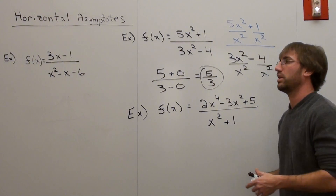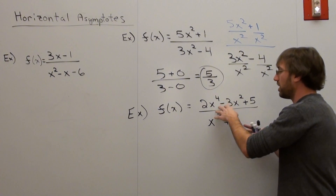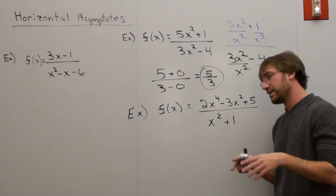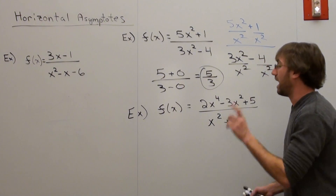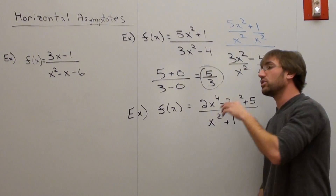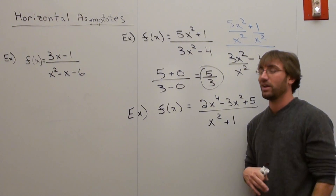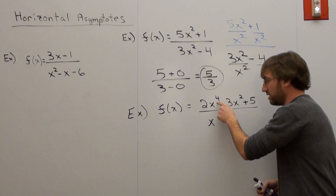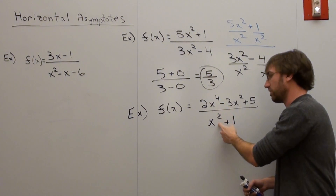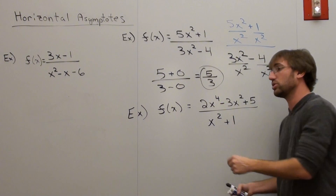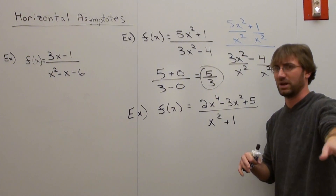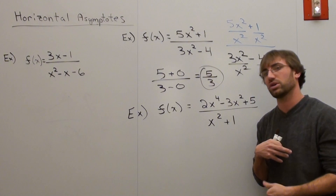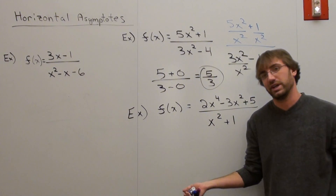What happens if the numerator's degree is bigger? If the numerator is bigger than the denominator in terms of degree, there is no horizontal asymptote. However, there is a stipulation: if the degree of the numerator is bigger than the degree of the denominator by exactly 1, then there's something called an oblique — or slant — asymptote. In this case the degree is 2 bigger: x to the 4th versus x squared. If this were degree 3 and denominator degree 2, you'd have an oblique asymptote, which I'll talk about later. But if you're 2 or more degrees bigger, there is no horizontal asymptote.